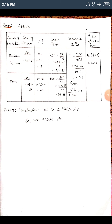Now we find the table value at 5% level of significance. The degrees of freedom for MSC is 3 and for MSE is 22. Looking up F(3, 22) in the F-distribution table, the table value is 3.05.